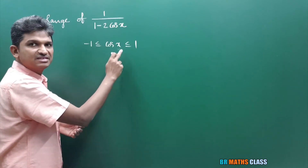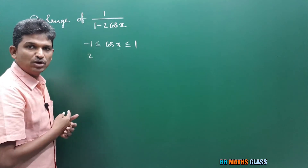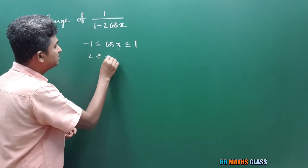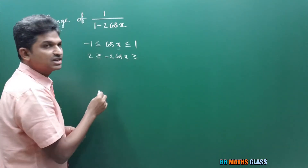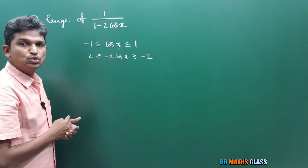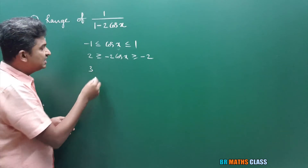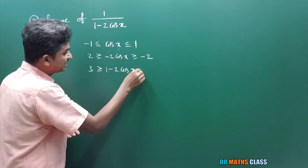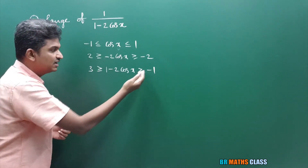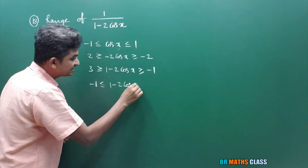I need minus 2cosx. To get it, I multiply the complete inequality by minus 2. Minus 1 into minus 2 is 2. For an inequality, multiplying by a negative real number changes the sign. Less than or equal to changes to greater than or equal to. Multiplying the complete inequality by minus 2: minus 2cosx, inequality changes, giving 2 ≥ minus 2cosx ≥ minus 2. Adding 1 to the complete inequality: 3 ≥ 1 minus 2cosx ≥ minus 1. Writing from the other end: minus 1 ≤ 1 minus 2cosx ≤ 3.